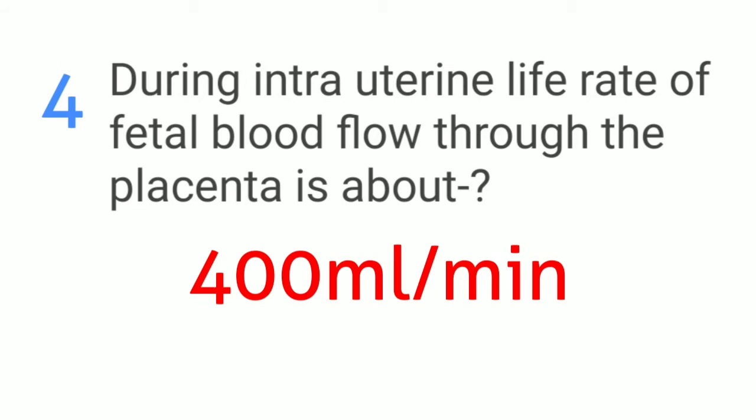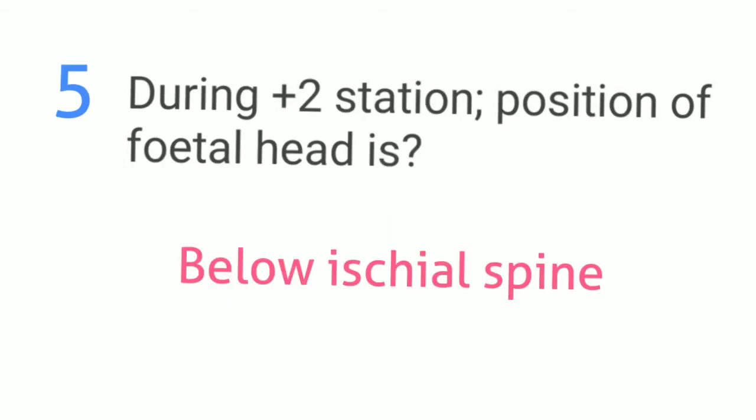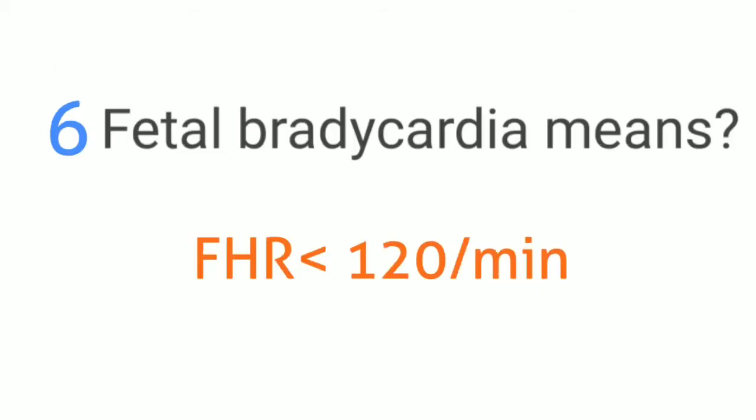During intrauterine life, rate of fetal blood flow through the placenta is about 400 ml per minute. During presentation, position of fetal head is below the ischial spine. Fetal bradycardia means fetal heart rate less than 120 per minute.